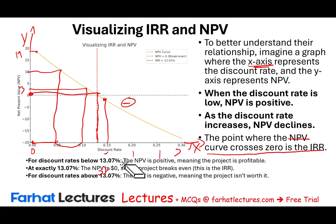For discount rates below 13.07%, NPV is positive — meaning accept the project. At exactly 13.07%, NPV is zero — the project is break-even, and this is the internal rate of return. For discount rates above 13.07%, NPV is negative, and the project is not worth undertaking.